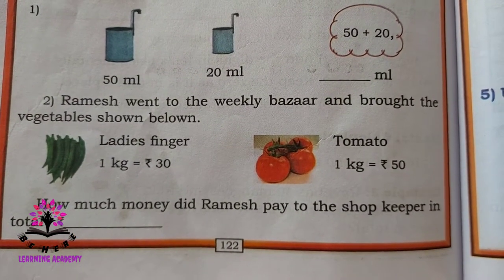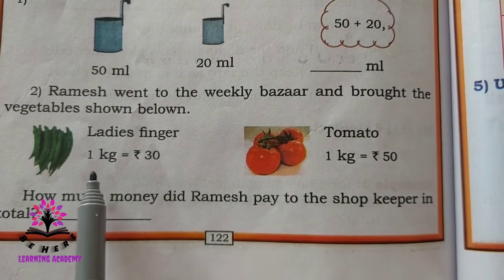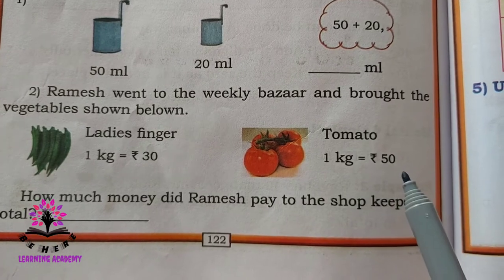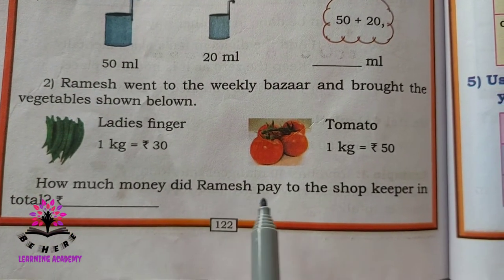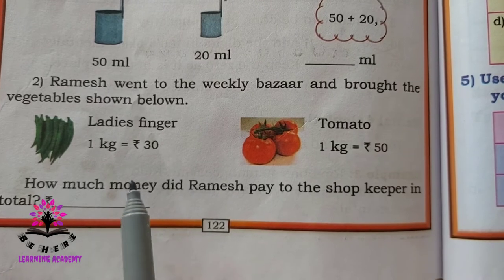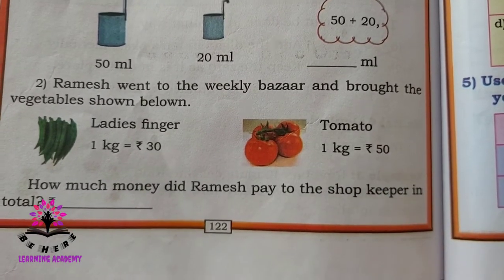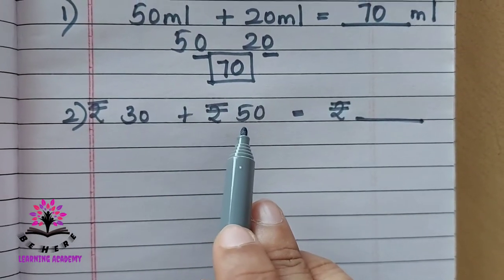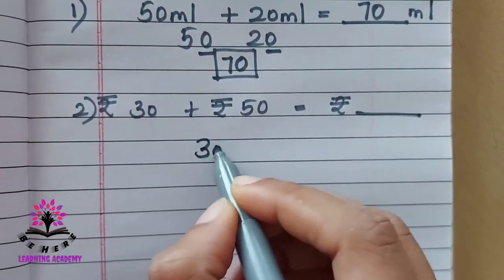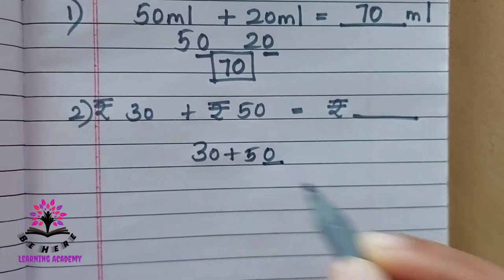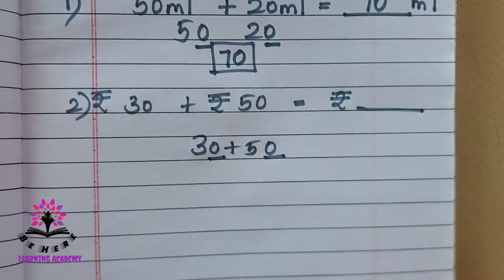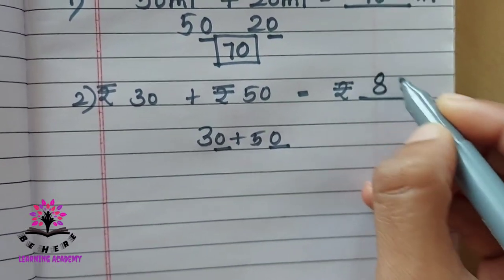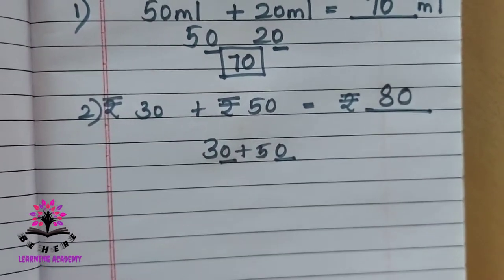Ramesh went to the weekly bazaar and bought vegetables: ladies finger for one kg at rupees 30, and tomato for one kg at rupees 50. How much money did Ramesh pay to the shopkeeper in total? It is 30 plus 50. Both have 0 in the unit place, so add the tens digits: 3 plus 5 is 8, add 0 in the unit place — the answer is rupees 80.